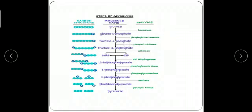After that, the second phase is the splitting phase, in which the six-carbon fructose 1,6-bisphosphate is split into two three-carbon compounds: glyceraldehyde 3-phosphate and dihydroxyacetone phosphate by the enzyme aldolase. The enzyme phosphotriose isomerase catalyzes the reversible interconversion of glyceraldehyde 3-phosphate and dihydroxyacetone phosphate.